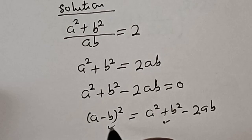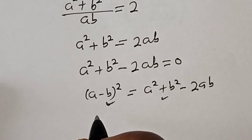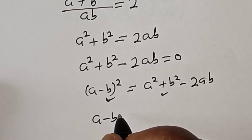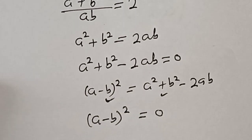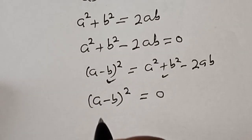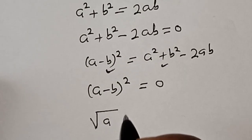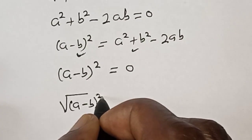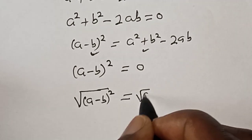Now let's replace this by this. So we have a minus b squared is equal to 0. Then let's take the square root of both sides. That is, square root of a minus b squared is equal to square root of 0.